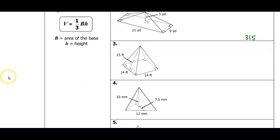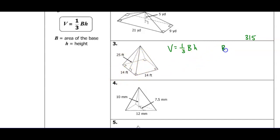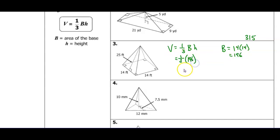For item three, the formula is one-third times the area of the base times the height. The base is a 14 by 14 square, so 14 times 14 gives 196. That goes right into the formula.